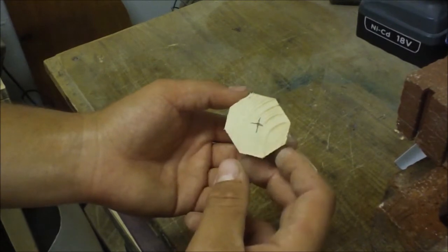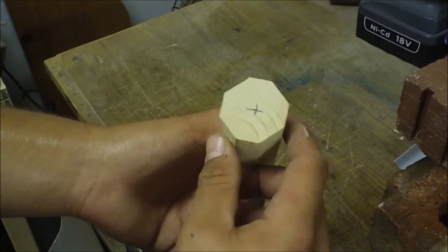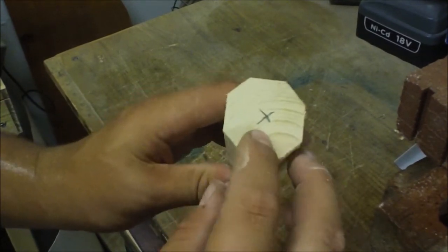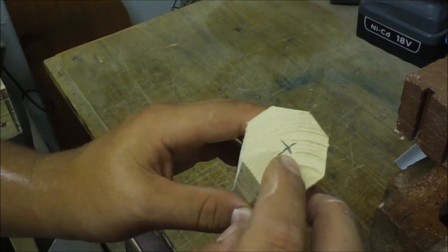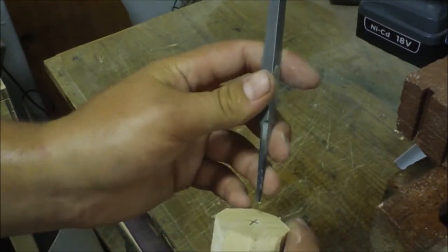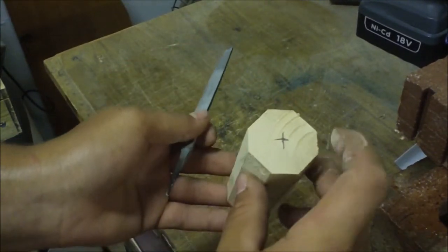Alright, so now what we have when our 45s are cut is this octagon shape, I believe that's what it's called. And what I did before I cut those angles is find the center of it, because we will be drilling a hole to attach our files or rasps that we'll be putting in, and it's easier to find the center before you cut the angles.